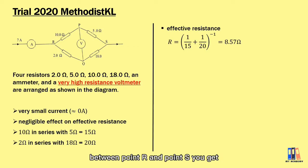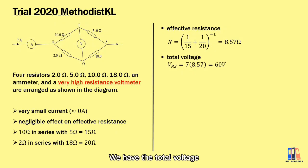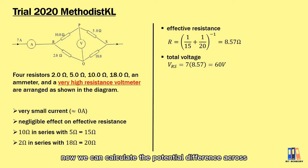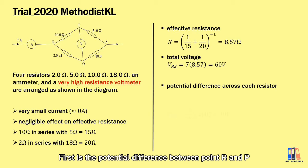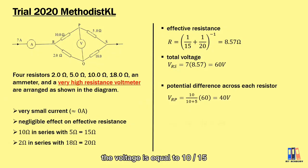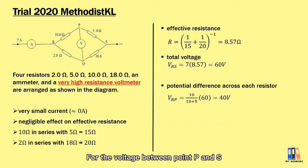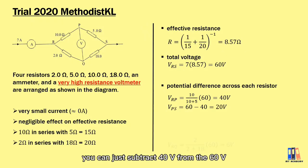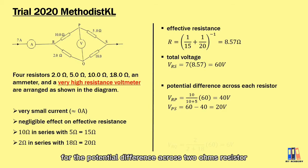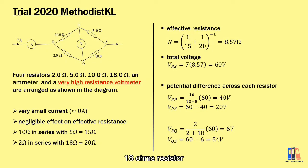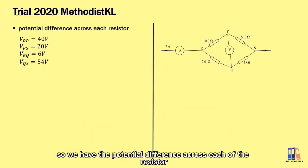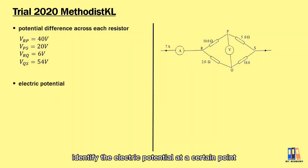We then calculate the total voltage between point R and point S, getting 60 volts. Using the potential divider formula, the potential difference between point R and P equals 10 divided by 15 multiplied by 60 volts, giving 40 volts. The voltage between point P and S is 60 minus 40, equal to 20 volts. Repeating the same steps for the 2 ohm resistor gives 6 volts, and the voltage across the 18 ohm resistor is 54 volts.